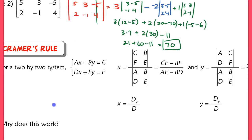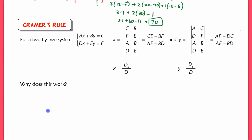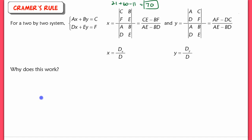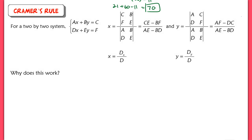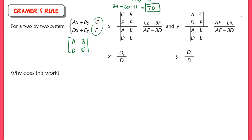Now we're going to use Cramer's rule as another method for solving a system of equations. I'll use a 2x2 system to show the proof, then we'll apply it to a 3x3 system. In a general 2x2 system with coefficients A, B, D, E and constants C and F, the coefficient matrix is just A, B, D, E. The constant matrix would be C, F.